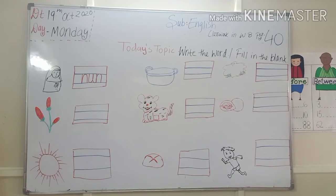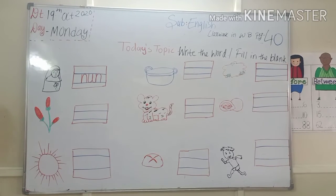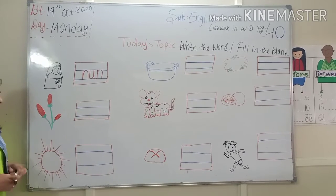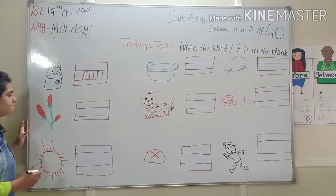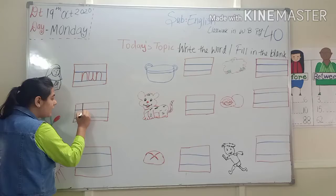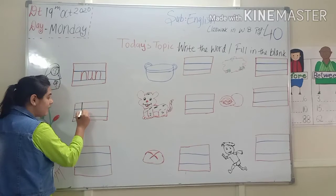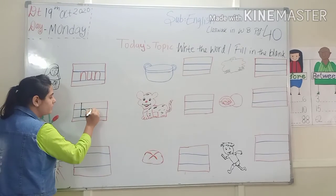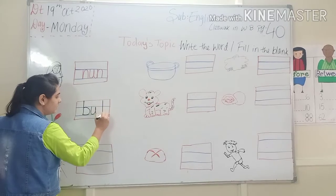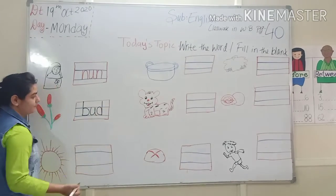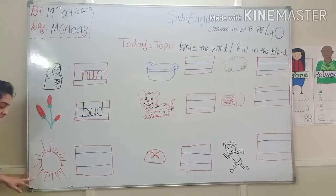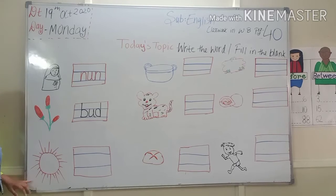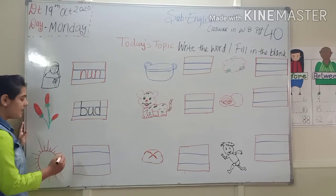Okay, now kids, next picture. Kids, tell me — whose picture is this? Yes, it's a bird. B-U-D. Bird. Next, kids — you all tell me. Yes, tell me. Yes — sun.